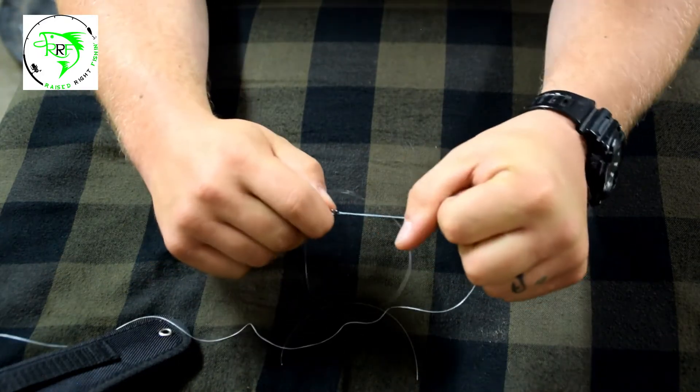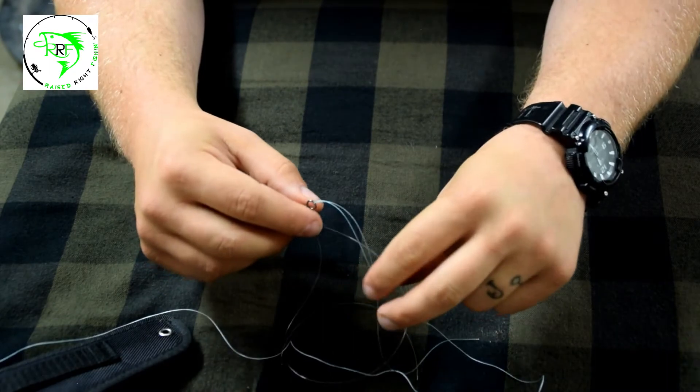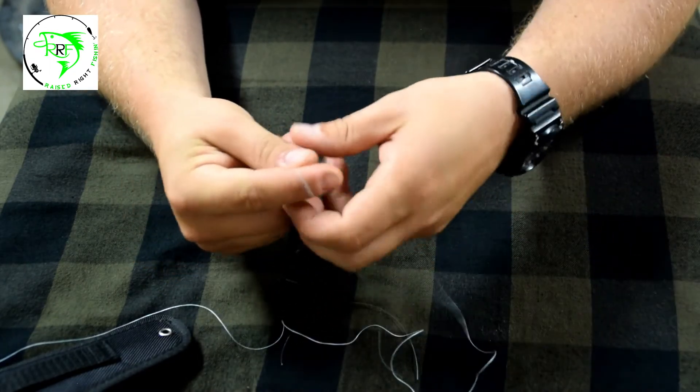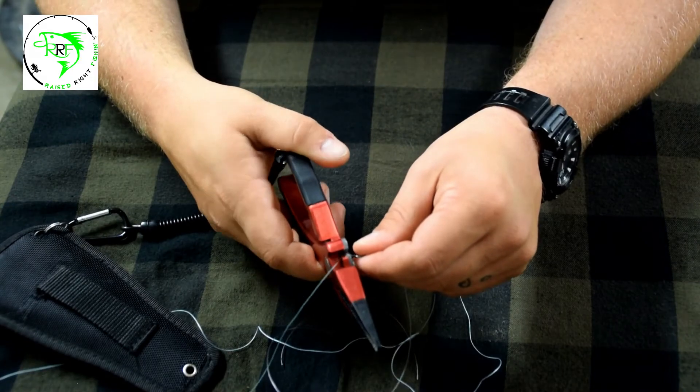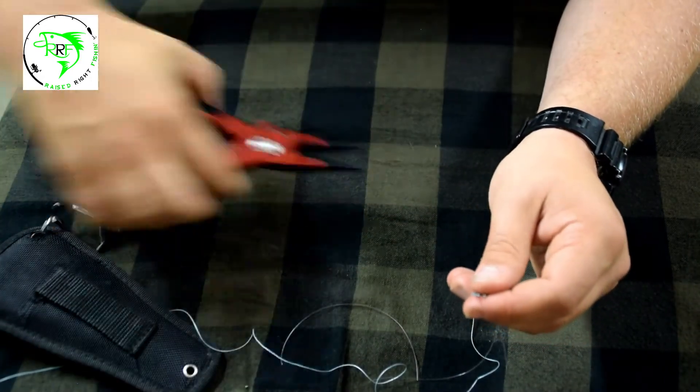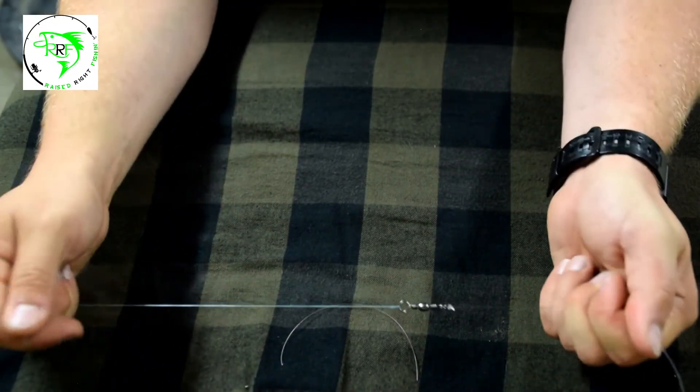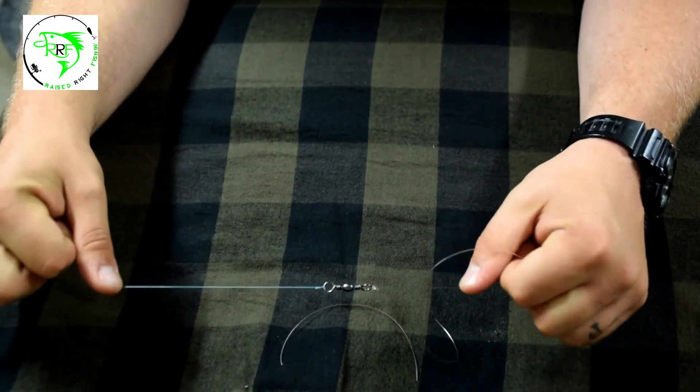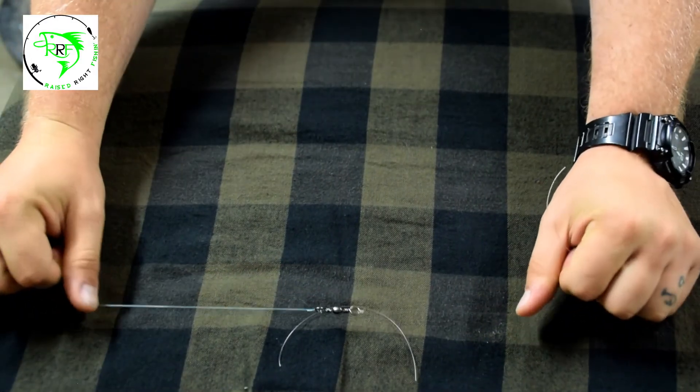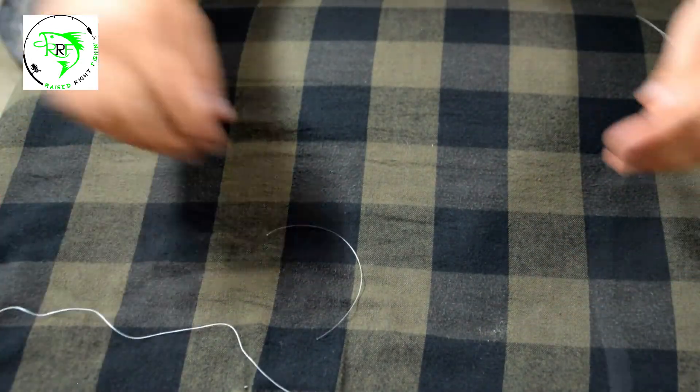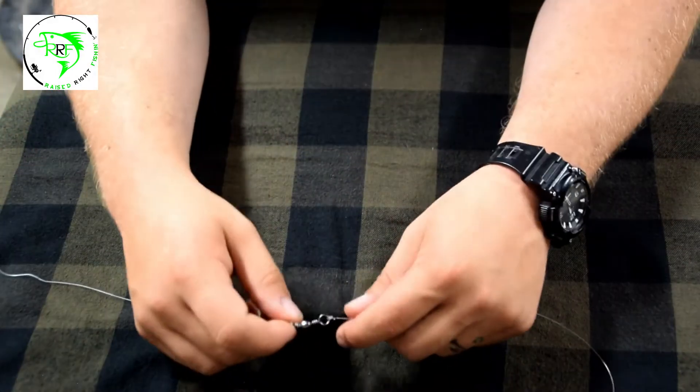Granted that was short just for demonstration purposes, but even if it's 10 feet long, you can still just sit there and rip that leader material out until you can get that loop around. Wet it. Now you've got your palomar knot tied with your braid. That's it man.